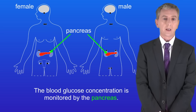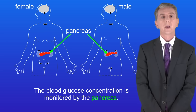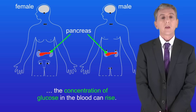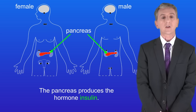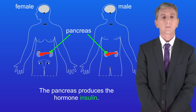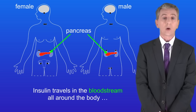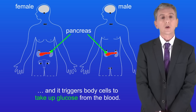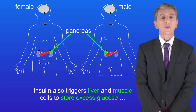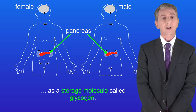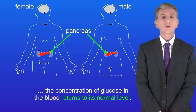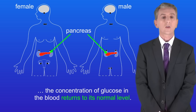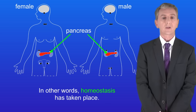The blood glucose concentration is monitored by the pancreas. After a meal rich in carbohydrates, the concentration of glucose in the blood can rise. This is sensed by the pancreas and the pancreas produces the hormone insulin. Insulin travels in the bloodstream all around the body and it triggers body cells to take up glucose from the blood. Insulin also triggers liver and muscle cells to store excess glucose as a storage molecule called glycogen. So because glucose is now being taken out of the blood and stored, the concentration of glucose in the blood returns to its normal level — in other words, homeostasis has taken place.